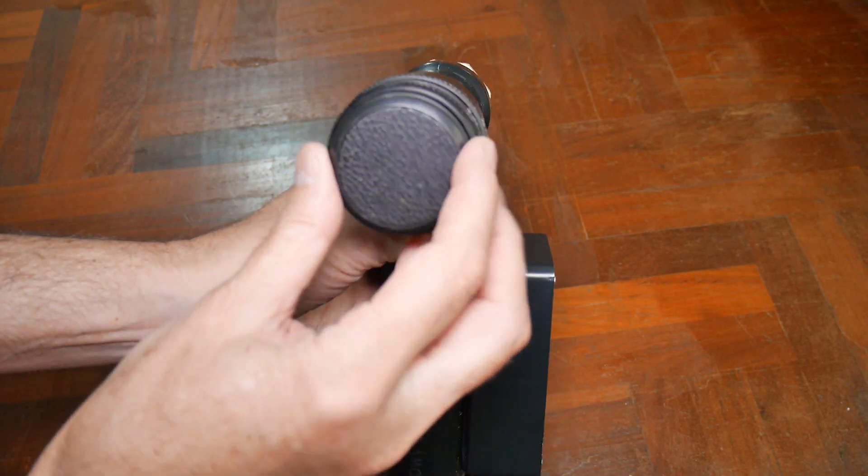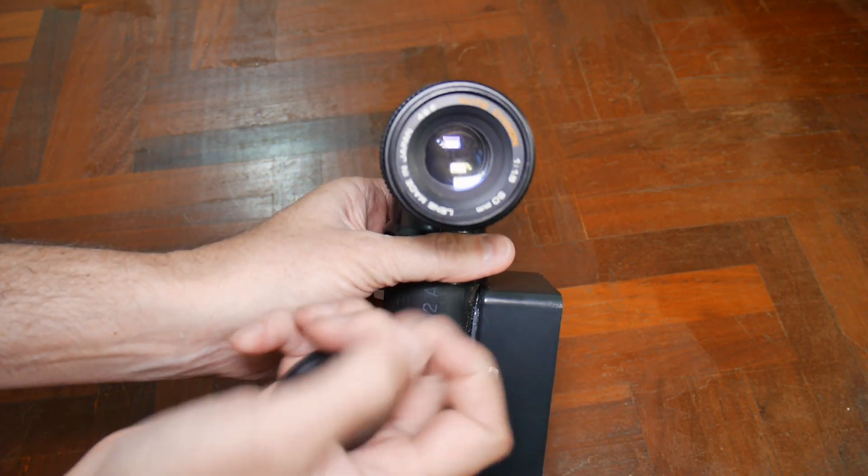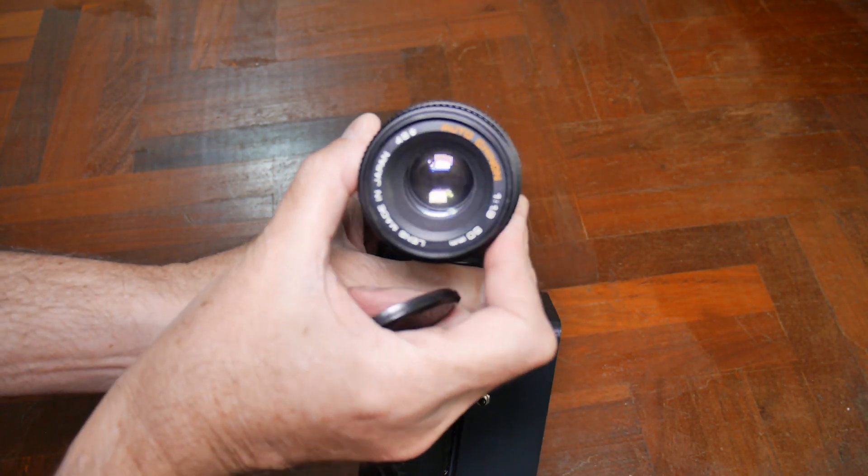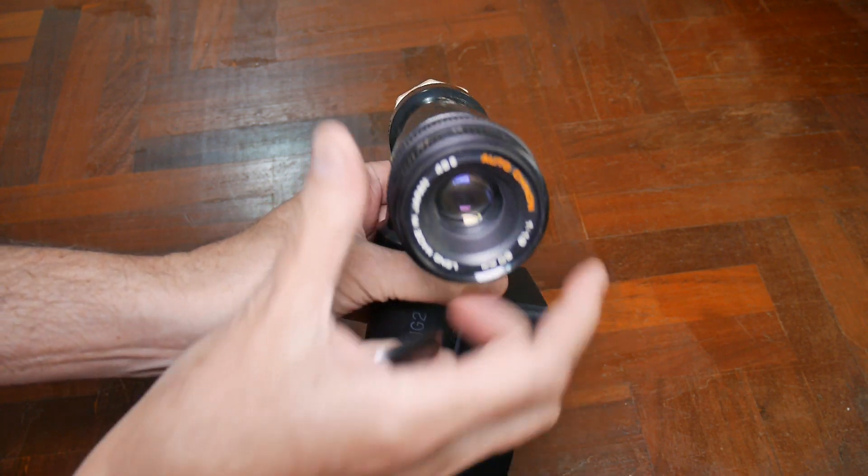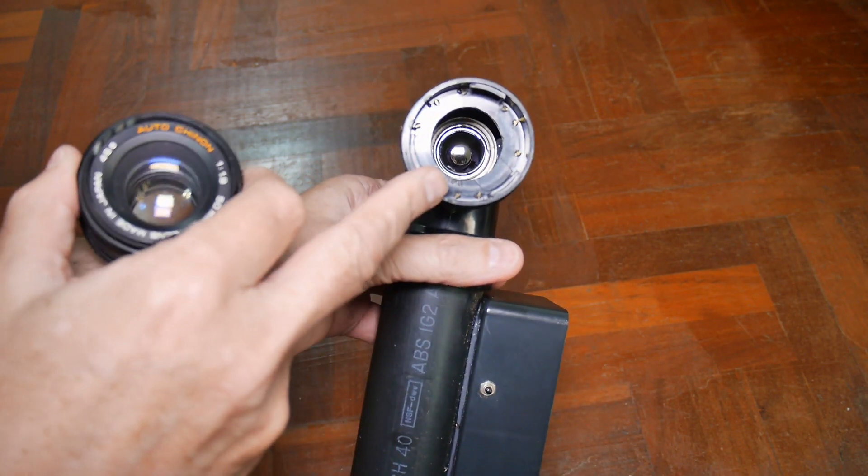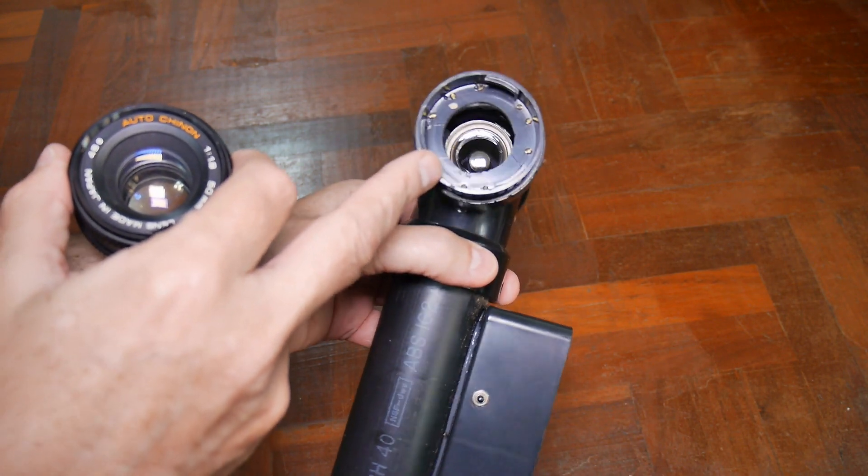I guess I should show you this. This is the lens. It's just a normal camera lens I adapted to here. It comes off. You can see the photomultiplier tube inside there.